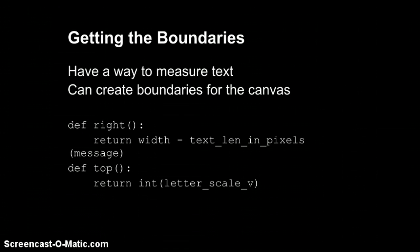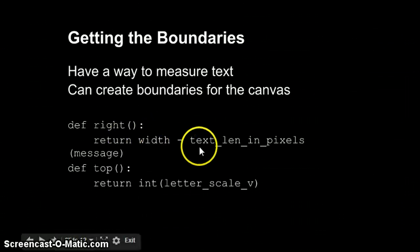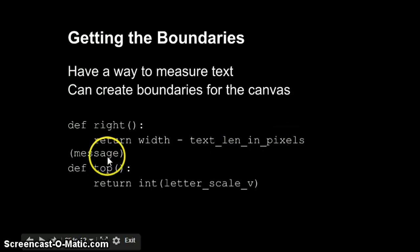So we have a way to measure text in pixels. The left and bottom are always the same as the left and bottom coordinates of the canvas. We need to calculate the right and top. We could use globals, but I used functions instead. Notice the top is always the vertical letter scale, and the right is the global width value minus the text length of the global message value.